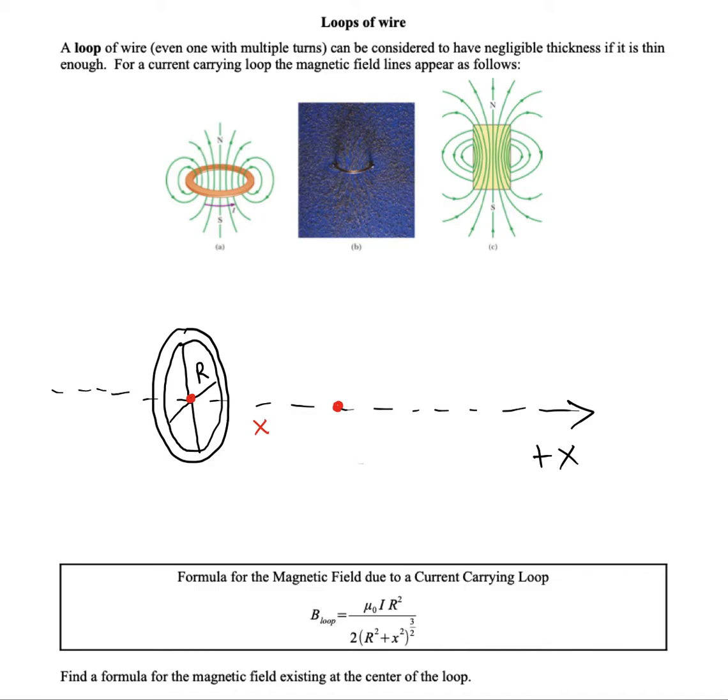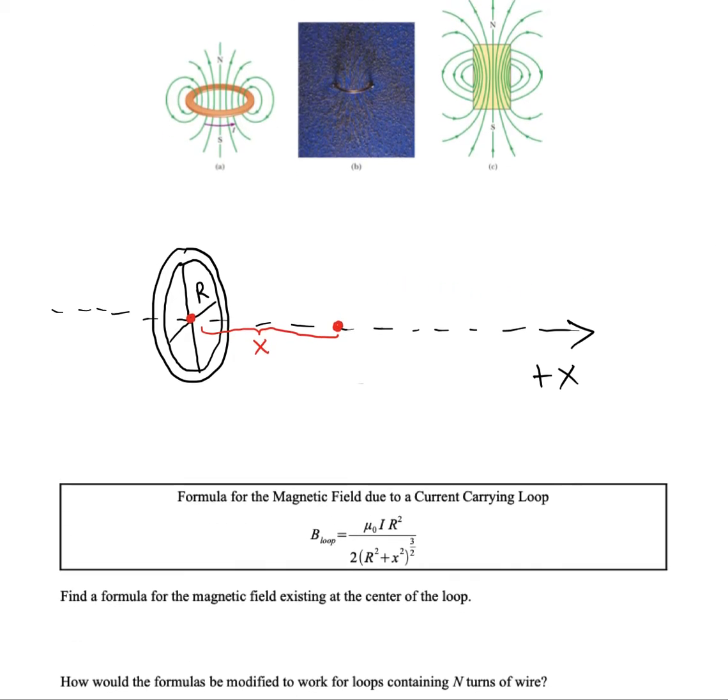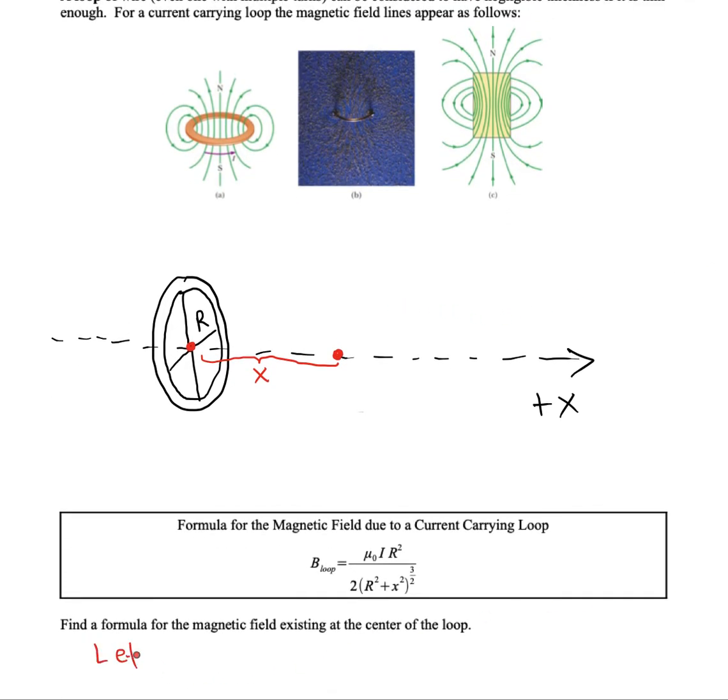Now if we want to use this very versatile formula to find the magnetic field strength at the center of the loop, then we can do that. All we have to do is just let x be zero. Right now x is a positive number, so here we would be trying to find the magnetic field at a point located far from the loop. But if we let x equal zero, can we simplify this formula a little bit?